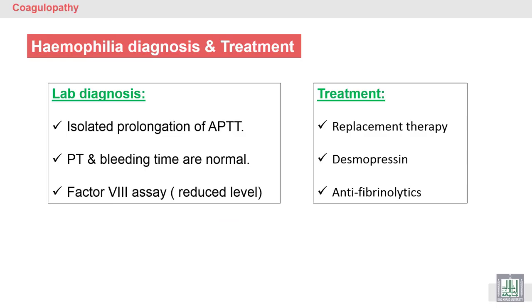To diagnose hemophilia, we use a simple test: the activated partial thromboplastin time (aPTT), which checks the intrinsic pathway. Factor 8 is present in the intrinsic pathway, so prolongation of this test beyond the control indicates deficiency of Factor 8. We can then perform a Factor 8 assay to quantitate the Factor 8 level.